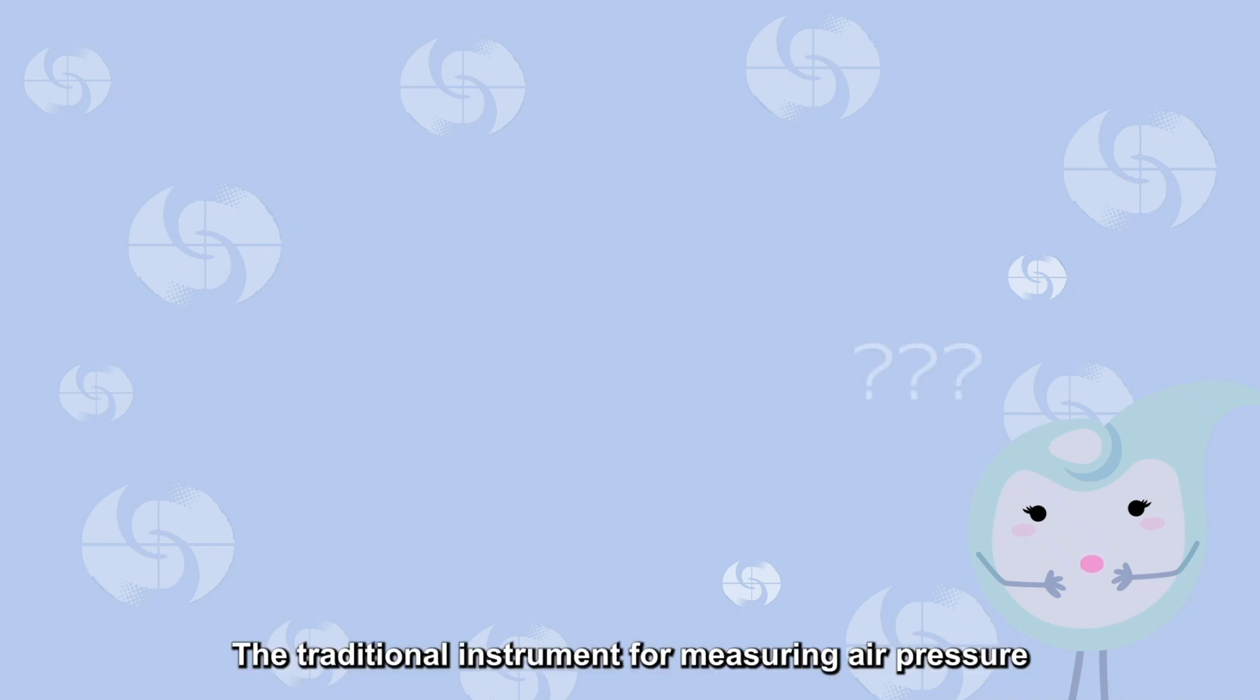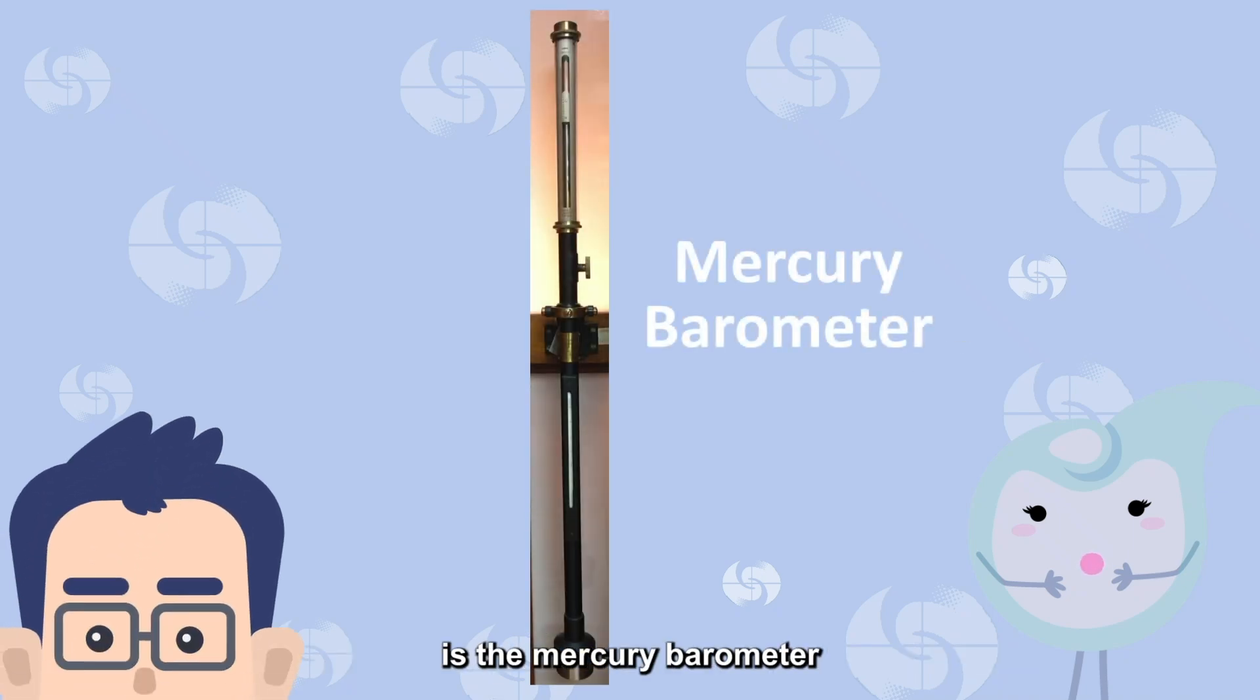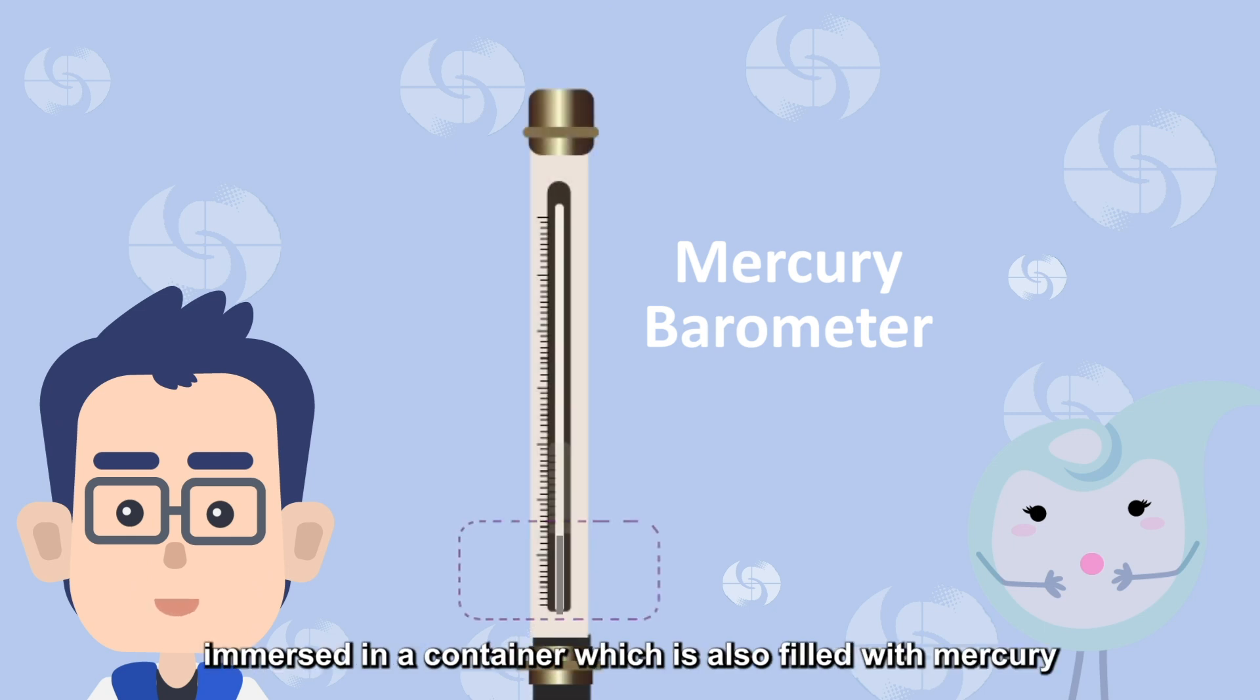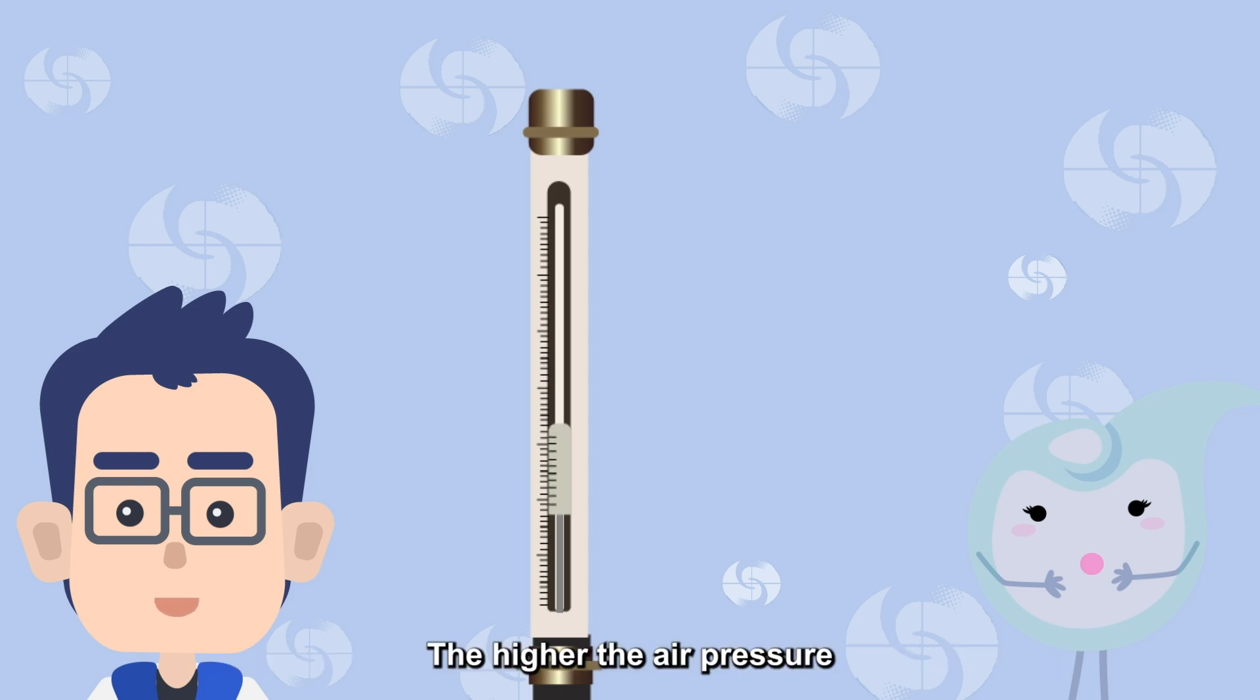The traditional instrument for measuring air pressure is the mercury barometer, a mercury-filled capillary with its opening immersed in a container which is also filled with mercury. The higher the air pressure, the greater will be the height of the mercury column. The scale displayed on the mercury column in the glass tube is the air pressure reading.